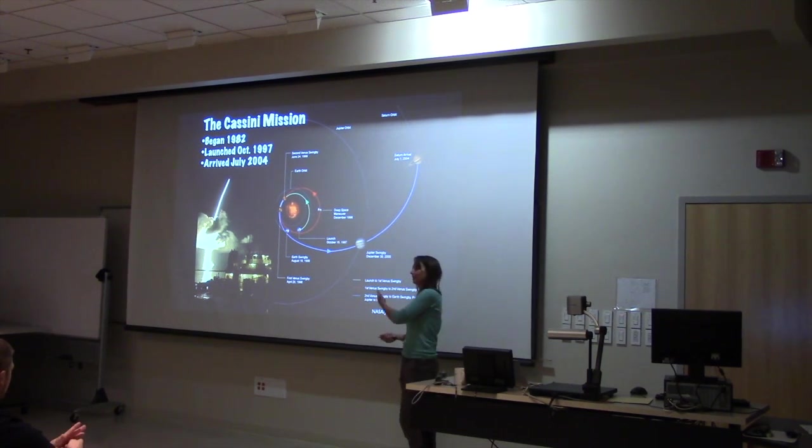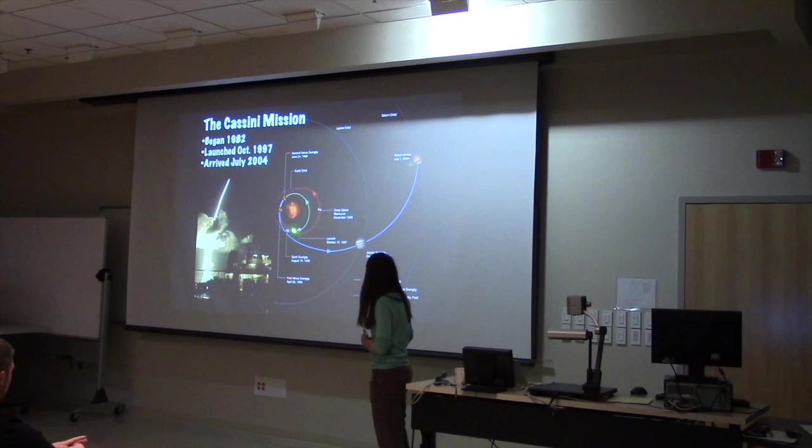And people, when this launched, maybe some of you guys remember that are older, were very worried that if this launch failed, or if you look at the trajectory, it left the Earth and made two flybys of Venus, and then it made another flyby of the Earth. Each one of these flybys give it a boost in its orbit and allow it to get out to the outer solar system.